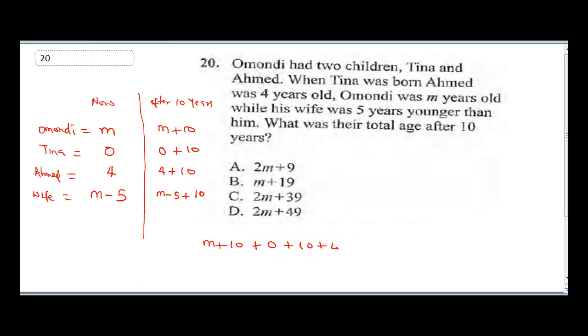It will be m plus 10 plus zero plus 10 plus 10 plus four plus 10 plus 10 plus m minus five plus 10. So we have m plus m will give us 2m. We're collecting our like terms. Then we have 10 plus zero is zero, 10 plus 10 is 20 plus four is 24 plus 10 plus 10 will be 44 minus five will be plus 39. So our final answer is 2m plus 39. So I'll circle my answer.